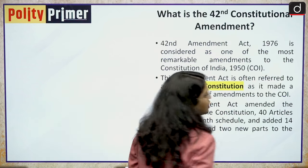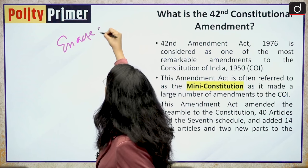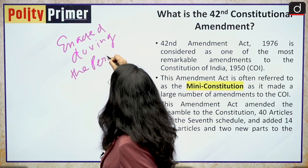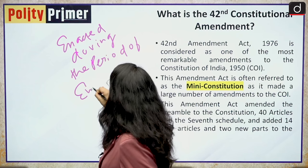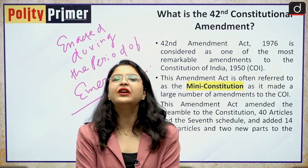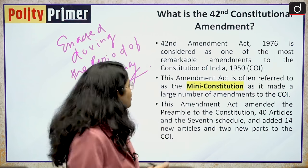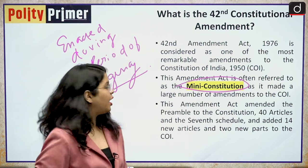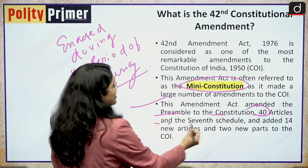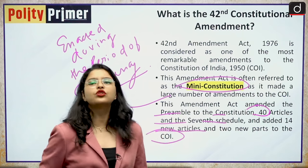The 42nd Constitutional Amendment Act was enacted during the period of emergency and it made very significant changes in the Indian constitution — so much so that this amendment is known as the mini constitution of India. This amendment act amended the preamble to the constitution, 40 articles and the 7th schedule, and added 14 new articles and 2 new parts to the constitution of India.